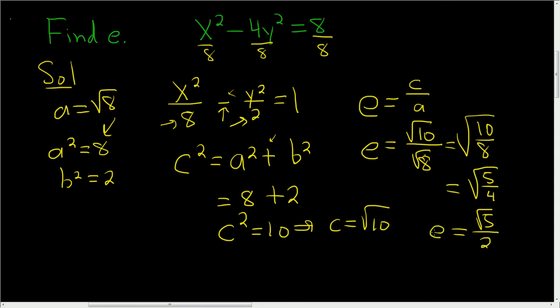So the eccentricity is the square root of 5 over 2. And that certainly makes sense because it is a number bigger than 1. And for a hyperbola, the eccentricity is always bigger than 1.